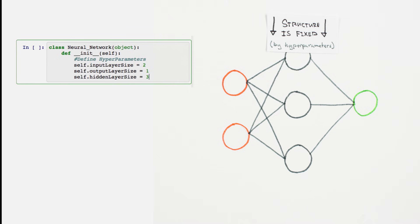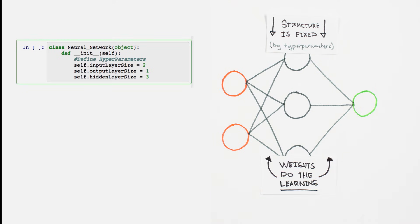Our learning algorithm is not capable of, for example, deciding that it needs another hidden unit. This is something that we must decide on before training. What neural networks do learn are the parameters, specifically the weights on the synapses.